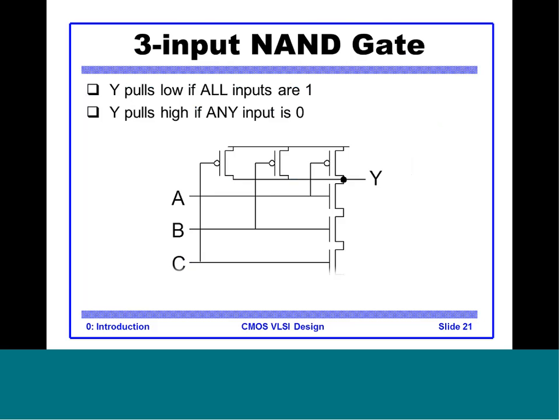A 3-input NAND gate is similar to 2-input — one more input simply adds one more pair of transistors. The pull-down network has all NMOS in series (AND connection), and PMOS are in parallel. The PMOS and NMOS connections are always complementary: if NMOS is in series, PMOS is in parallel, and vice versa.